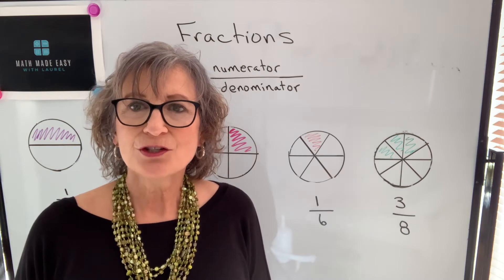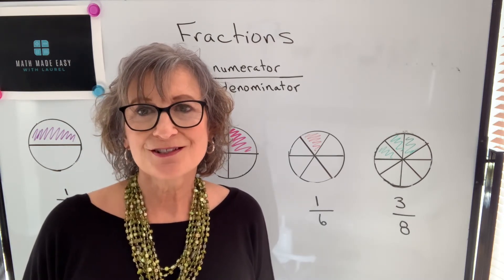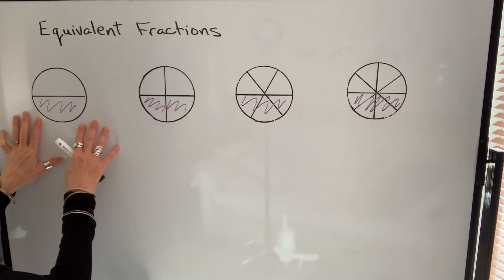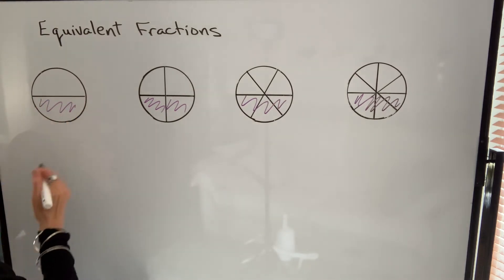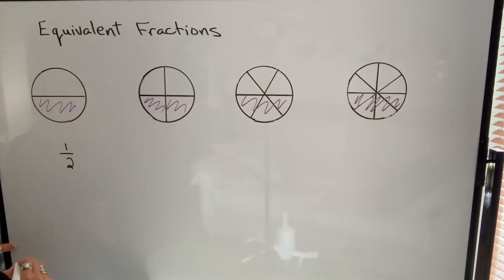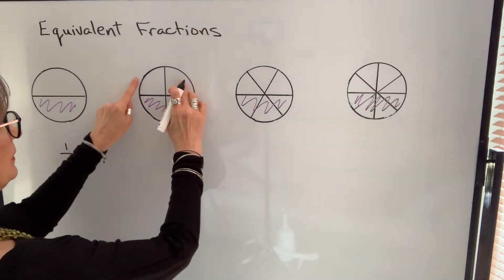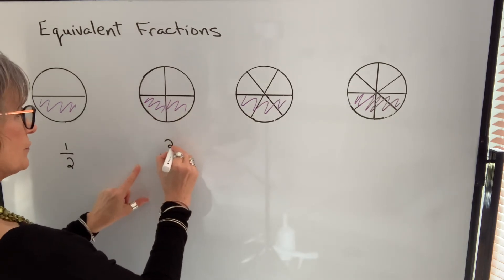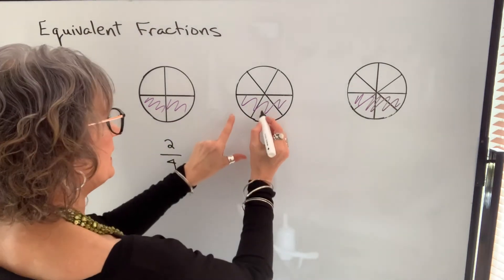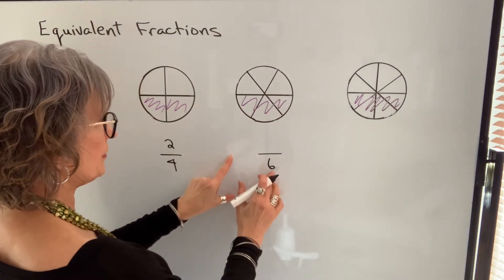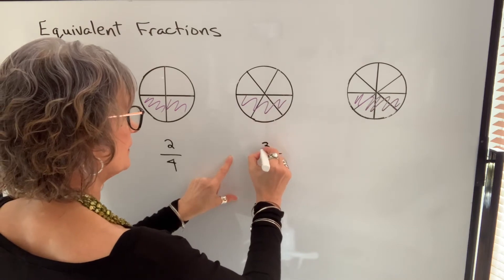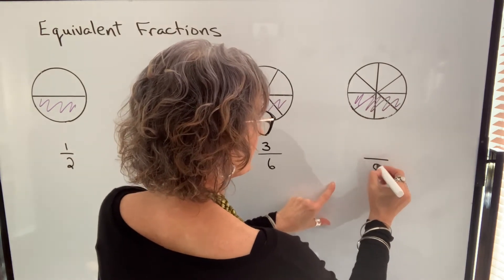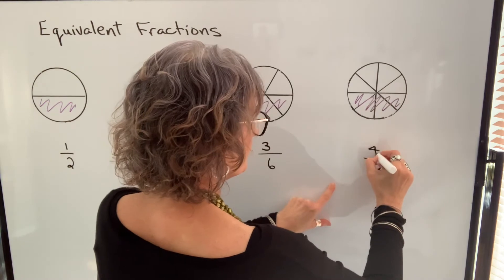When you're working with fractions, you'll need to know what an equivalent fraction is, so let's take a look at that. We're going to use pies. This first pie is split into two pieces — the person ate one piece, so they ate one half of the pie. In the next example, it's split into four pieces, so the denominator is four, and the person ate two pieces out of four, so two fourths. This next pie is split into six pieces, so the denominator will be six, and the person ate three of those pieces. Here we have a pie divided into eight pieces, and four of them are colored, so someone ate four eighths.